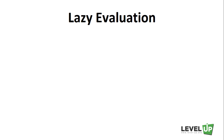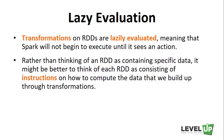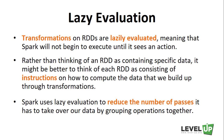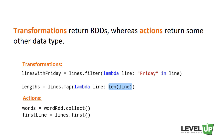Transformations on RDDs are lazily evaluated, meaning that Spark will not begin to execute until it sees an action. Rather than thinking of an RDD as containing specific data, it might be better to think of each RDD as consisting of instructions on how to compute the data that we build up through transformations. Spark uses lazy evaluation to reduce the number of passes it has to take over our data by grouping operations together.